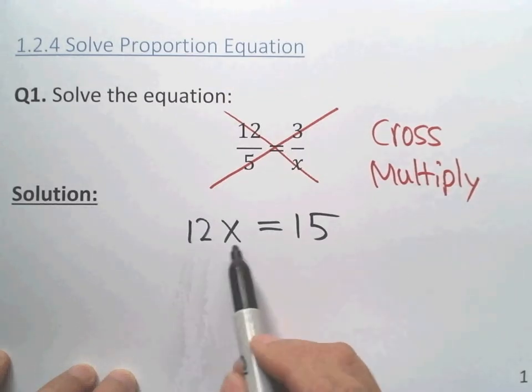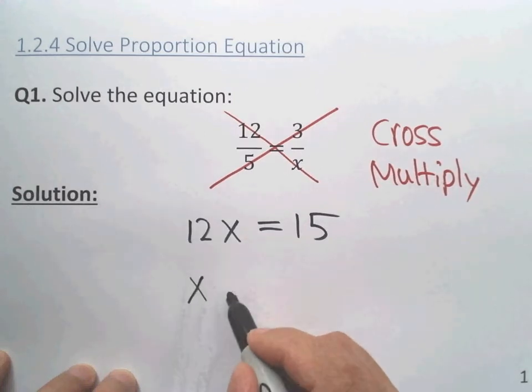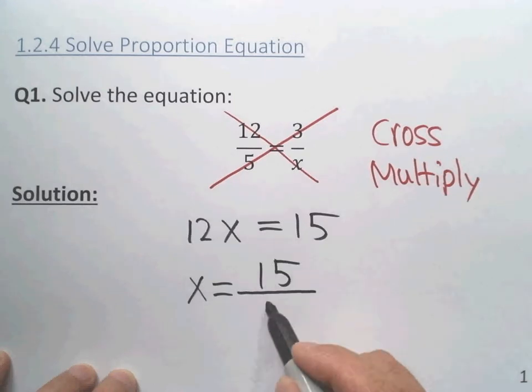Therefore, we get x equals 15 divided by 12, okay?